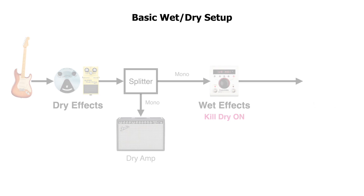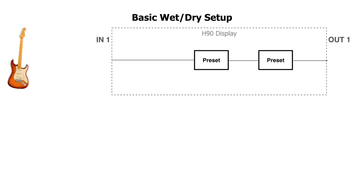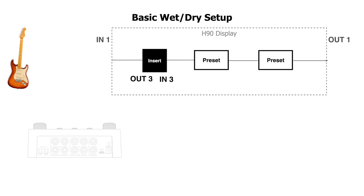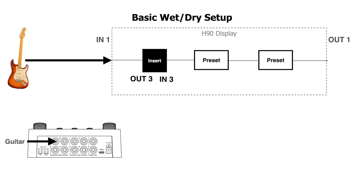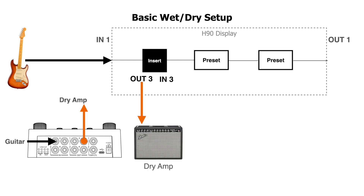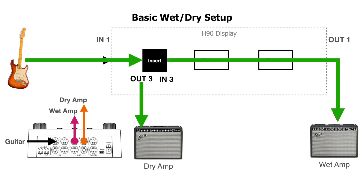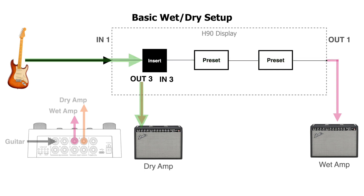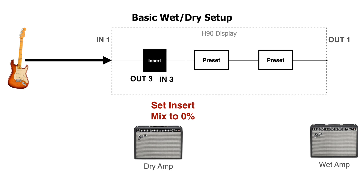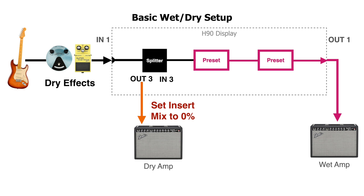To set up a wet/dry rig using the H90, place an insert first in the chain as our splitter. Connect the guitar to input 1 of the H90, connect out 3 to the dry amp input, and connect out 1 to the input of the amp for wet effects. The insert serves as the way we take the guitar signal and split it to the dry and wet amps. For this to work properly, the insert mix parameter found in the routing menu must be set to 0% — only then will the insert behave like a splitter. We can then place dry effects before the H90 and use both algorithms after the insert for our wet effects chain.